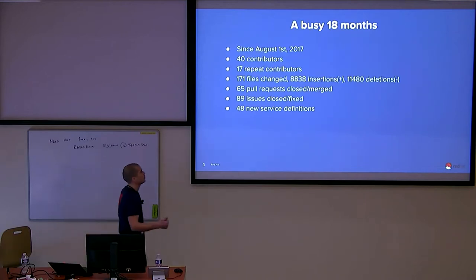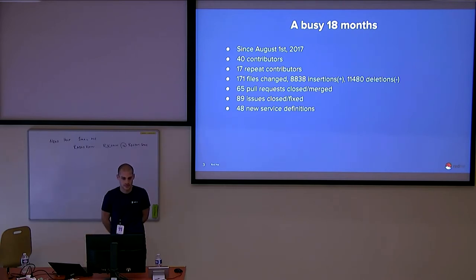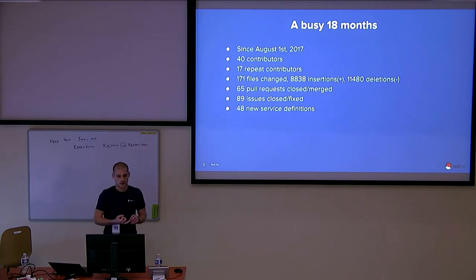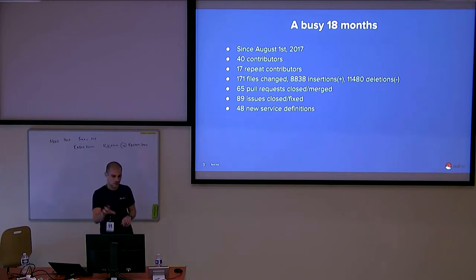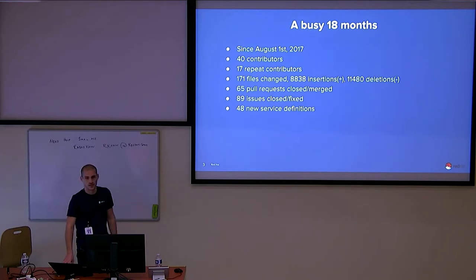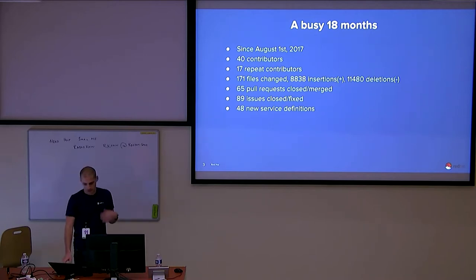It's been a very busy 18 months. Here are some random statistics pulled from the Git log. Over 18 months, we've had 40 unique contributors upstream — these are actual pull requests upstream. Interestingly, 17 of those are repeat contributors, which I thought was really cool. We've had 65 pull requests and 89-plus issues closed in that 18 months, plus lots and lots of new service definitions — things like a one-line command to add MDNS or SSH.